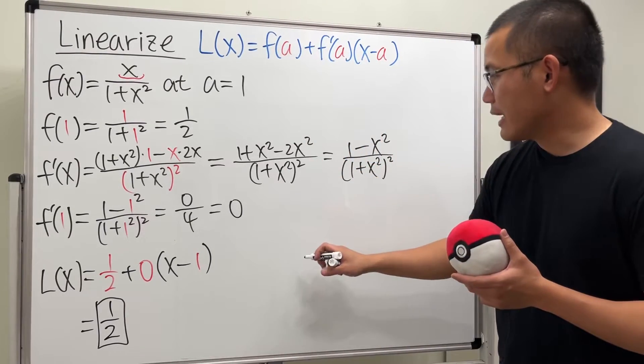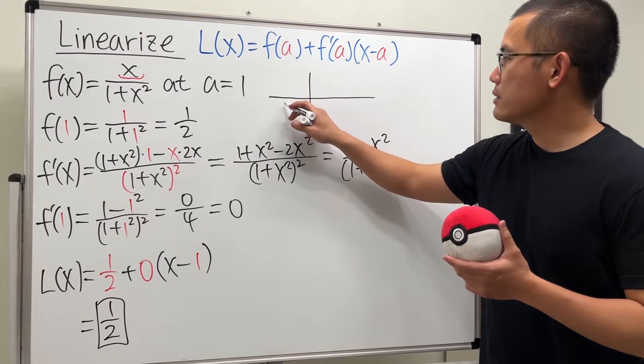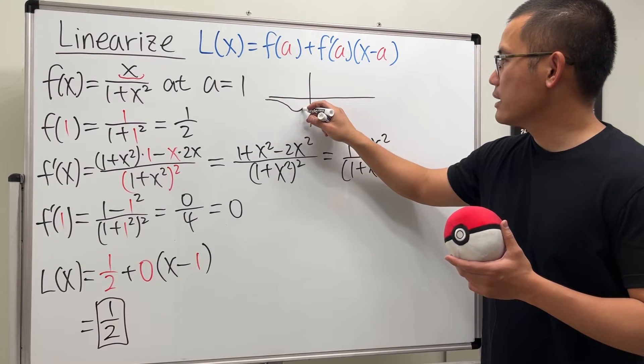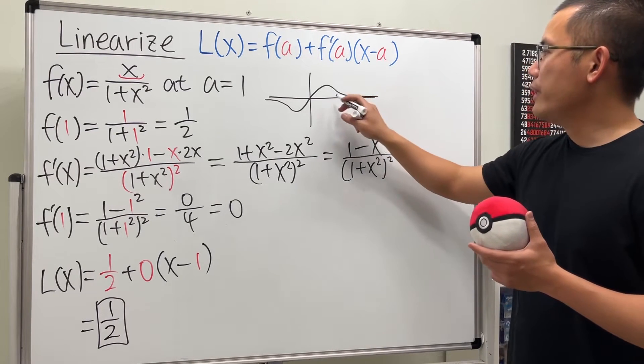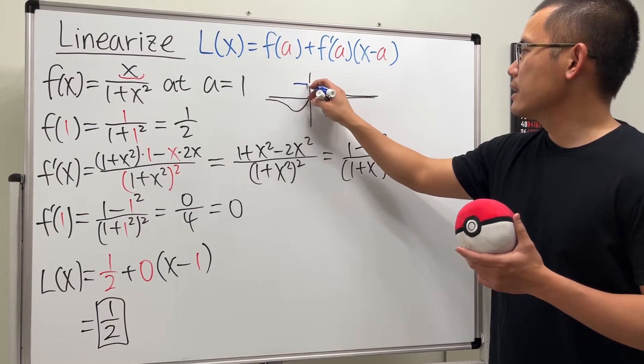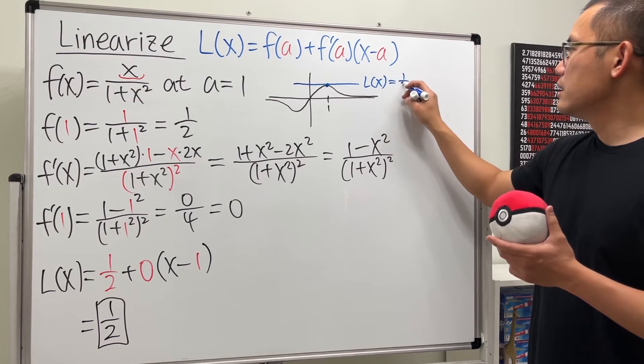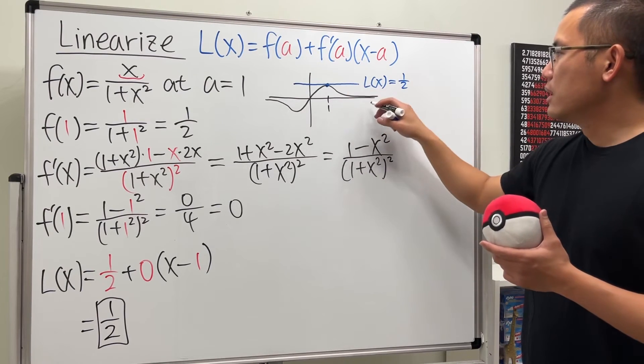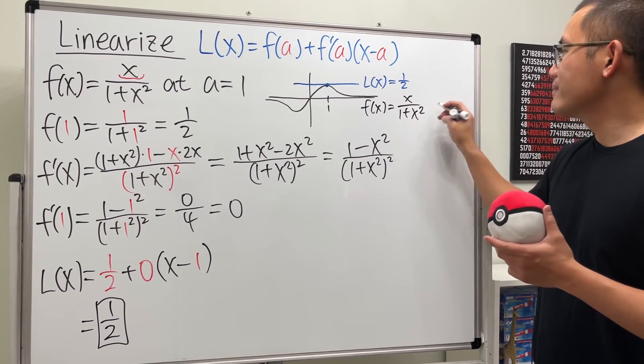So, if you look at the graph of that, I will put it down right here for you guys. It will look like this. So, when x is negative, you get negative, and then it goes down like this, and then it comes back up, and then like this, and then like that. When x is 1, right? When the a is 1, you get a horizontal tangent line. So, that's why the linearization is just 1 over 2, the horizontal line, and, of course, the equation in black is our function f of x equals x over 1 plus x squared.